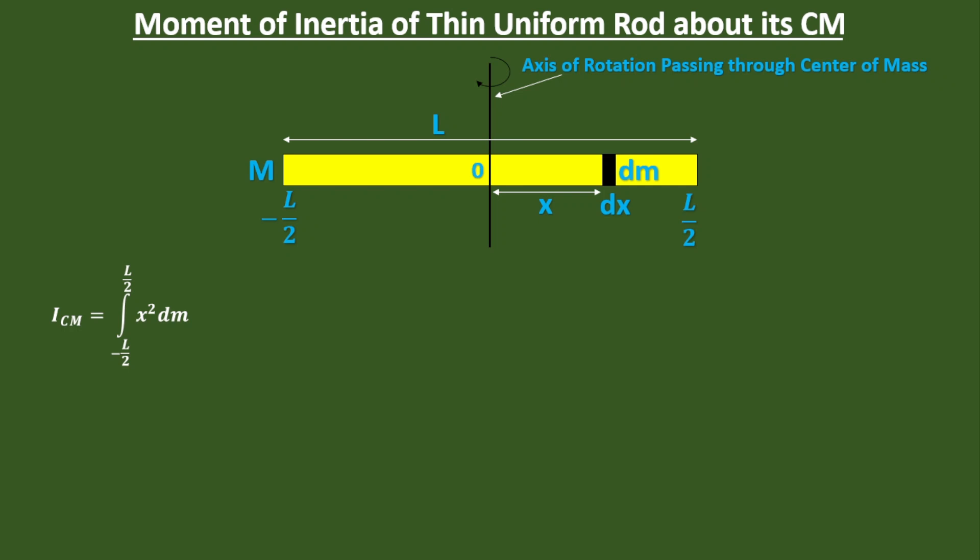How can we do that? Simply, dm is the mass of that small thickness dx. So dm is basically mass per unit length times dx. Now you can replace dm by this quantity.